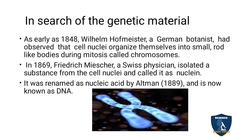The question of whether DNA, RNA, or proteins is the genetic material dates to the early 19th century. As early as 1848, Wilhelm Meister, a German botanist, observed that cell nuclei organize themselves into small rod-like bodies during mitosis, called chromosomes. These rod-like structures are visible in the nucleus.